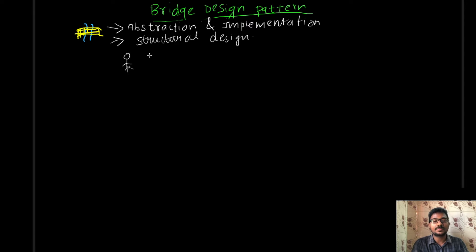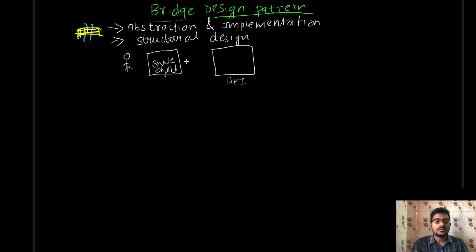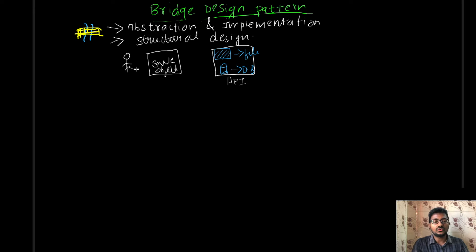For example, if you are a software developer using some software APIs, you might be writing and calling a method called save object. This API initially used a file to store the data. After two years, the implementation was upgraded from a file mechanism to a database mechanism — for example, MySQL or PostgreSQL. These details are abstracted from the client, so the client can just call save object and the implementing classes handle the technical details.